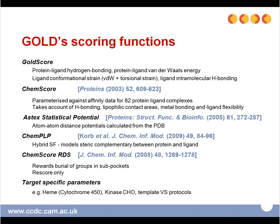We are often asked the question: which scoring function should be used when? In general, GoldScore is very good and particularly good for polar binding sites. We tend to recommend ChemScore for lipophilic binding sites. The ASP statistical potential performs well, but it may best be employed in rescoring experiments. ChemPLP is very fast and possibly also more accurate than GoldScore, which is why it has become the default scoring function in GOLD. We recommend that in the first attempt you try ChemPLP over other scoring functions.